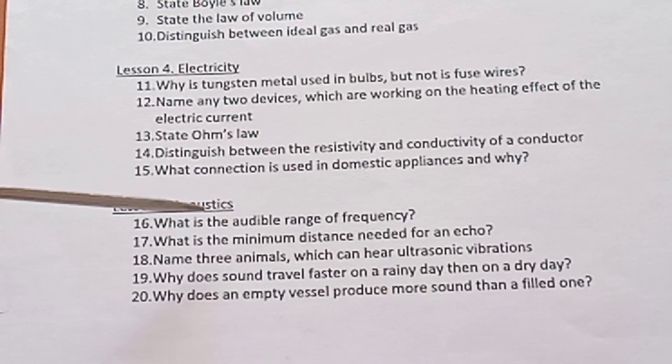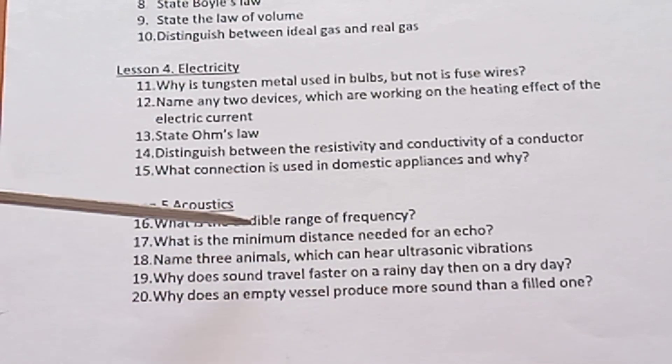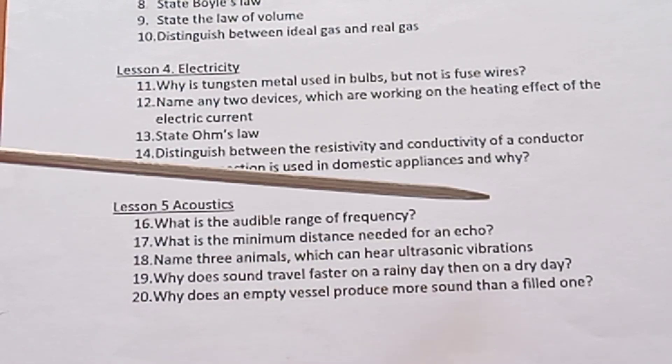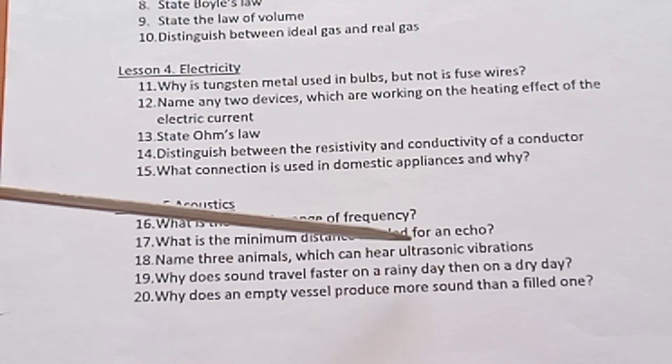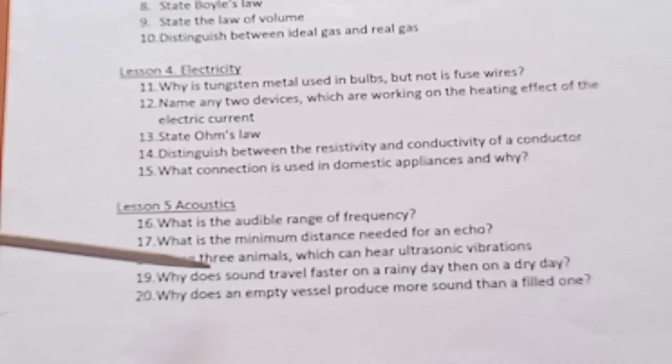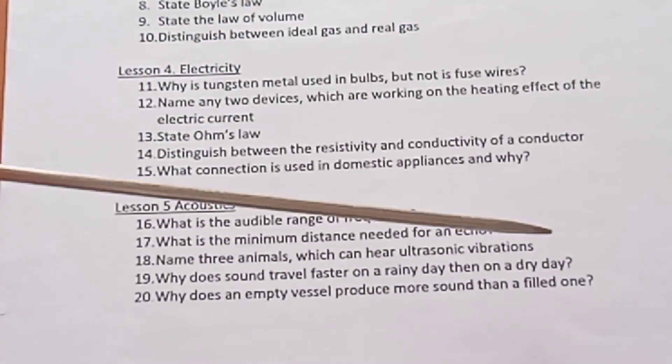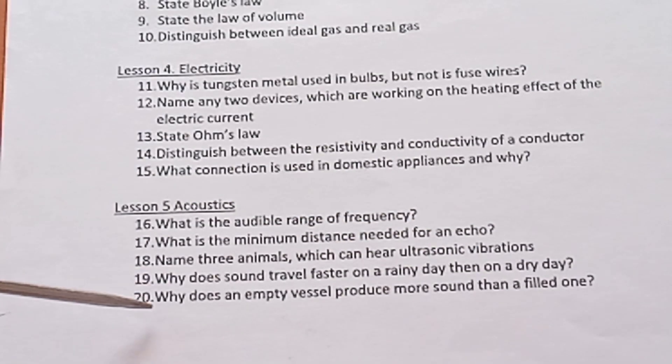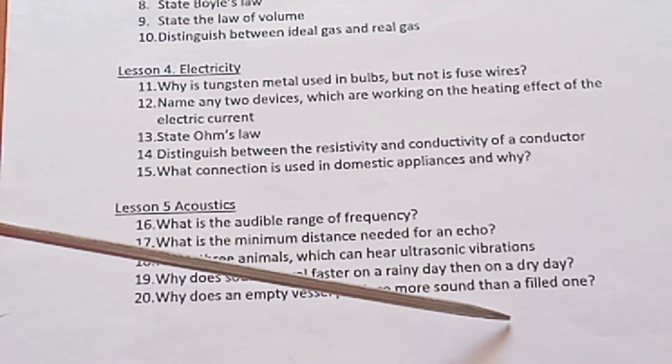Lesson 5 Acoustics. What is the audible range of frequency? You have to write the range. What is the minimum distance needed for an echo? Name three animals which can hear ultrasonic vibrations. Why does sound travel faster on a rainy day than on a dry day? Why does an empty vessel produce more sound than a filled one?